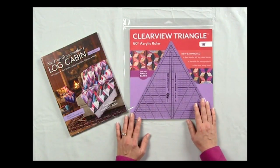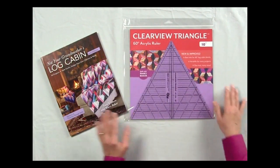Hi, I'm Marci Baker, and I am an author with C&T Publishing. I also design tools with them, and this is our Clearview Triangle Ruler. It's our 10-inch, and it works really well with our log cabin book. Let me show you how these designs come together so easily.